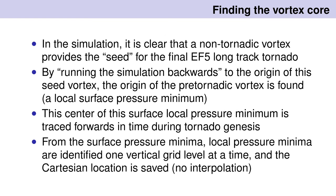In the simulation, it's very clear that there's a non-tornadic vortex that starts the whole game going for the vortex that becomes the EF5 tornado. We can essentially run the simulation backwards to the origin of the initial seed vortex location as determined by a local drop in pressure at the surface. I go forward in time from this initial center of low pressure at the surface, then go back to those files and go upwards from each vortex location, tracing it as high as I can.